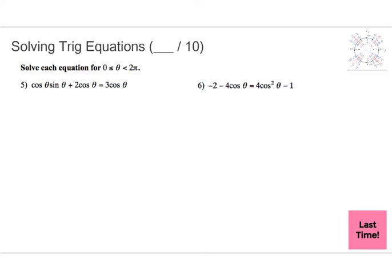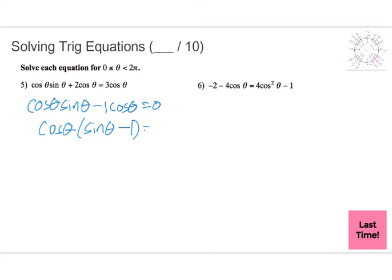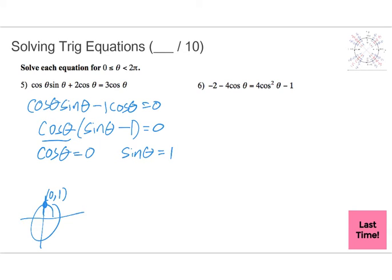Next we've got some solving trig equations. We've got a unit circle here. For the first one, I see both cosine and sine, so I'm going to bring everything to the same side: cosine(θ)·sine(θ) minus cosine(θ) equals 0. Factoring out cosine(θ) leaves us with cosine(θ)·(sine(θ) − 1) = 0. That gives cosine(θ) = 0 and sine(θ) = 1. On the unit circle, cosine(θ) = 0 gives θ = π/2 and 3π/2. For sine(θ) = 1, that's only at π/2, which we've already included.